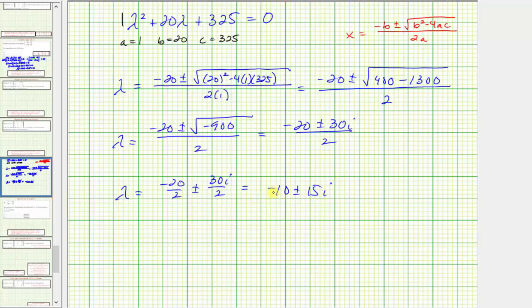So we have two eigenvalues. Lambda one equals negative 10 plus 15i, and lambda two equals negative 10 minus 15i.